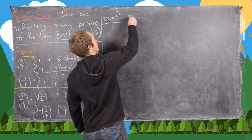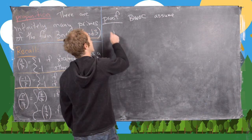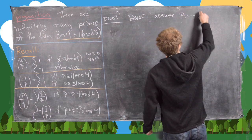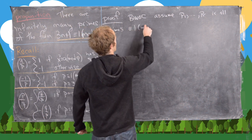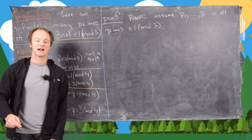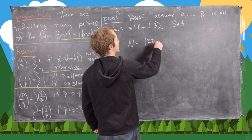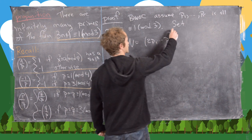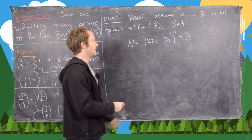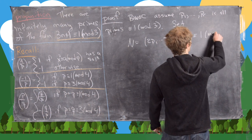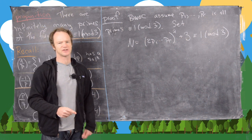Now let's look at the proof. By way of contradiction, assume that the list p1 up to pr is all primes congruent to 1 mod 3 — a finite list. We consider the number N equal to 2 times the product p1 up to pr, squared, plus 3. The important thing to notice is that this N is congruent to 1 mod 3, which is easy to check using elementary techniques.